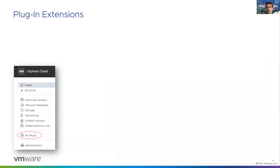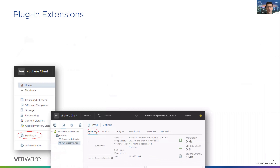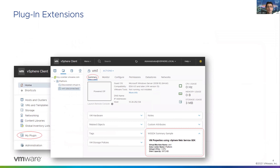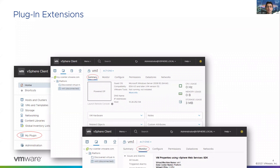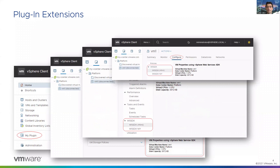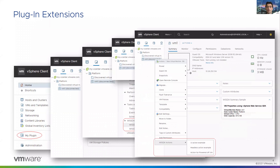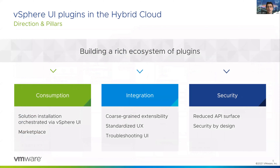You've seen plugins across the vSphere UI — in the navigator and shortcuts on a global level, and in the inventory and summary, monitor, and configure tabs. Plugins can also extend the menus with custom actions. Apart from the pre-installed plugins shipped with the vCenter server, the usual vSphere environment would contain only a few other plugins from VMware or from other vendors.